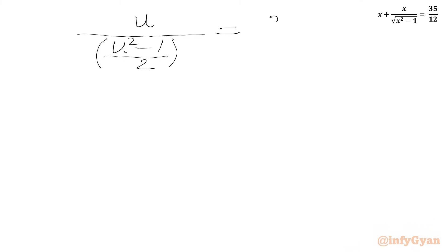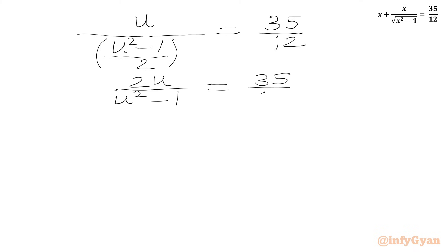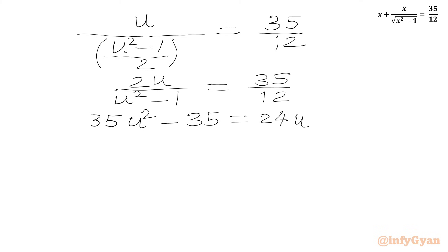This simplifies to 2u / (u² - 1) = 35/12. Cross multiplying gives the quadratic 35u² - 24u - 35 = 0.